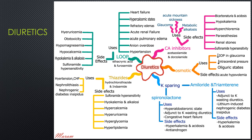Loop diuretics are used for heart failure, renal failure, pulmonary edema, and hypertension. Side effects include ototoxicity, hypocalcemia, hypomagnesemia, and hypokalemia. Thiazide diuretics are frequently used for hypertension and congestive heart failure, with side effects including hypokalemia, hypercalcemia, hyperglycemia, and hyperlipidemia. Spironolactone is used for blocking aldosterone and as an adjunct to potassium-wasting diuretics such as loop diuretics, and also for congestive heart failure; its side effects include hyperkalemia and acidosis.